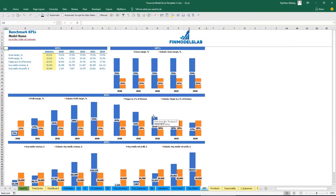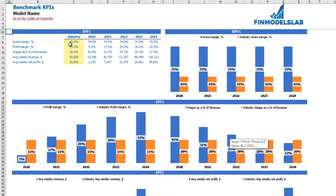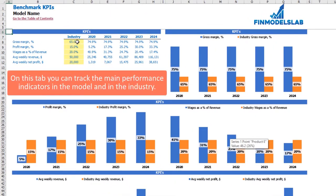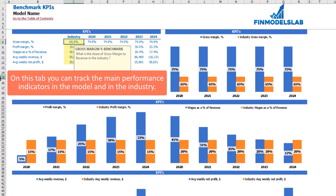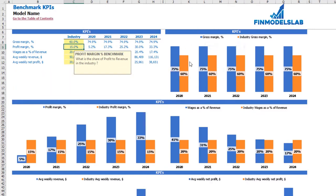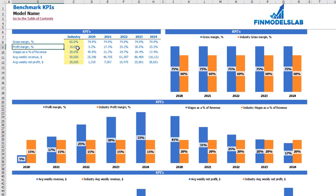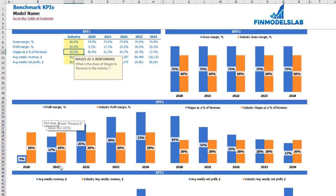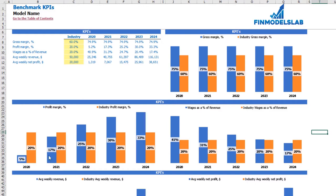On the benchmarks KPIs tab, you may find your main industry-specific KPIs, which are changeable for your industry and your country. For example, gross margin industry benchmark is 60% for your country — you may see this on the chart. Industry gross margin is shown in orange and your model's gross margin is shown in blue. In the same way you may change profit margin, for example 20%, and see it on the chart below.